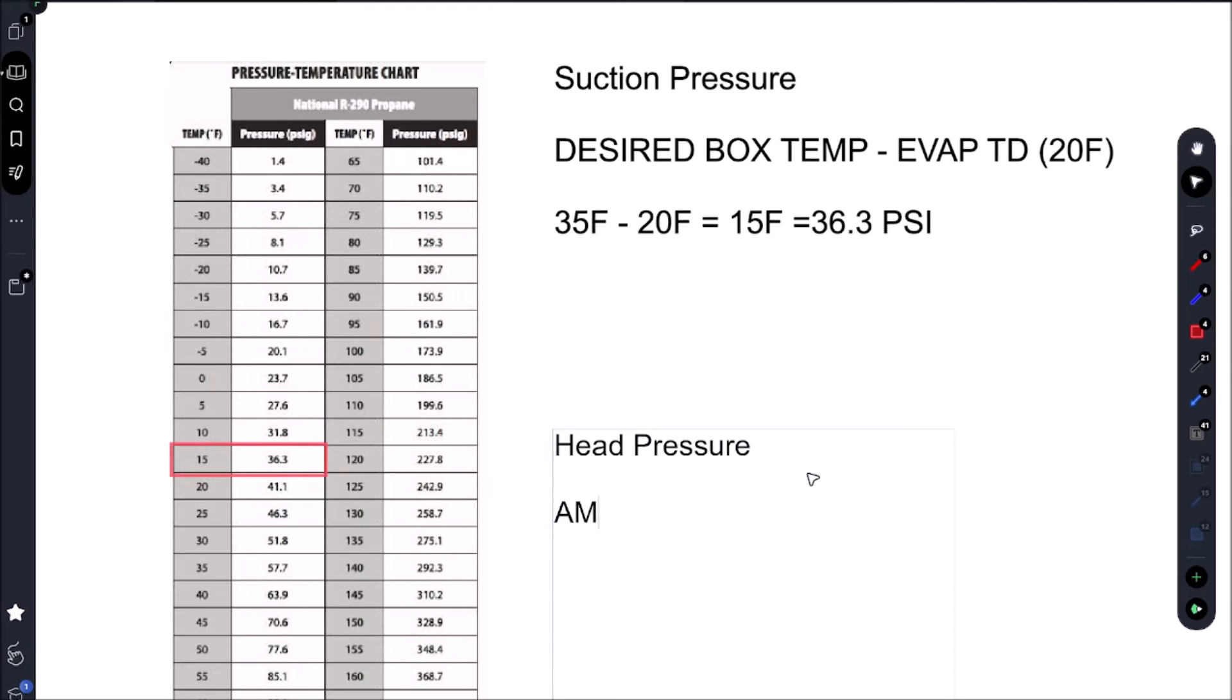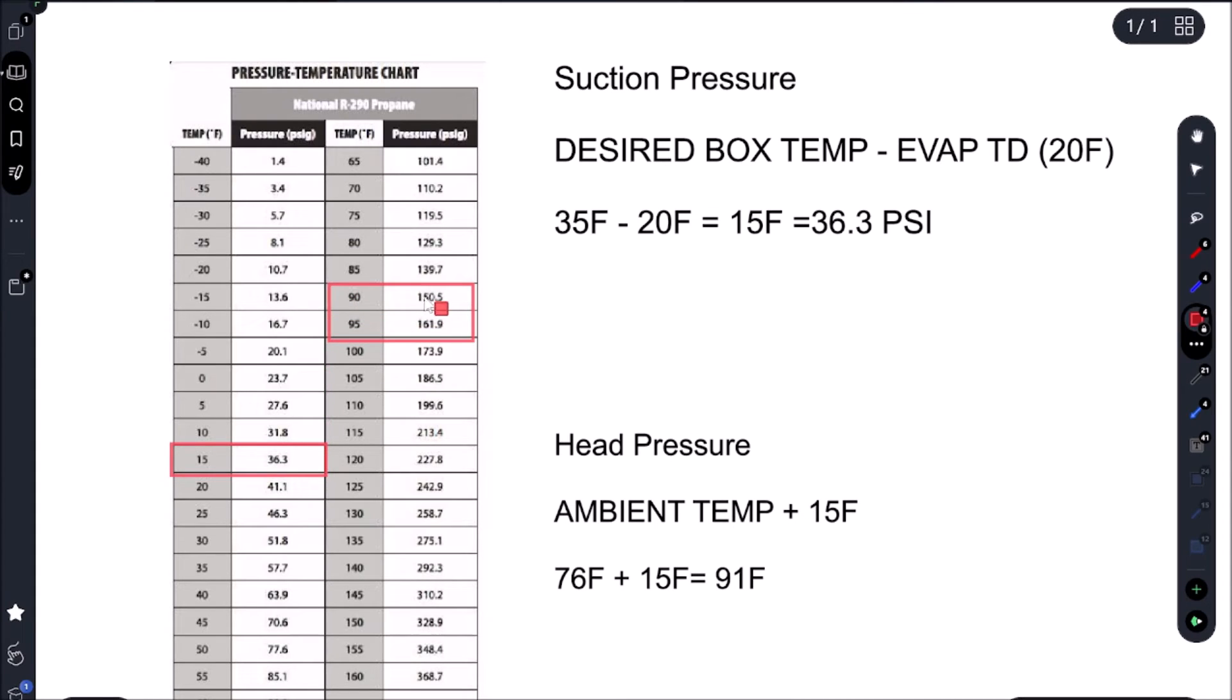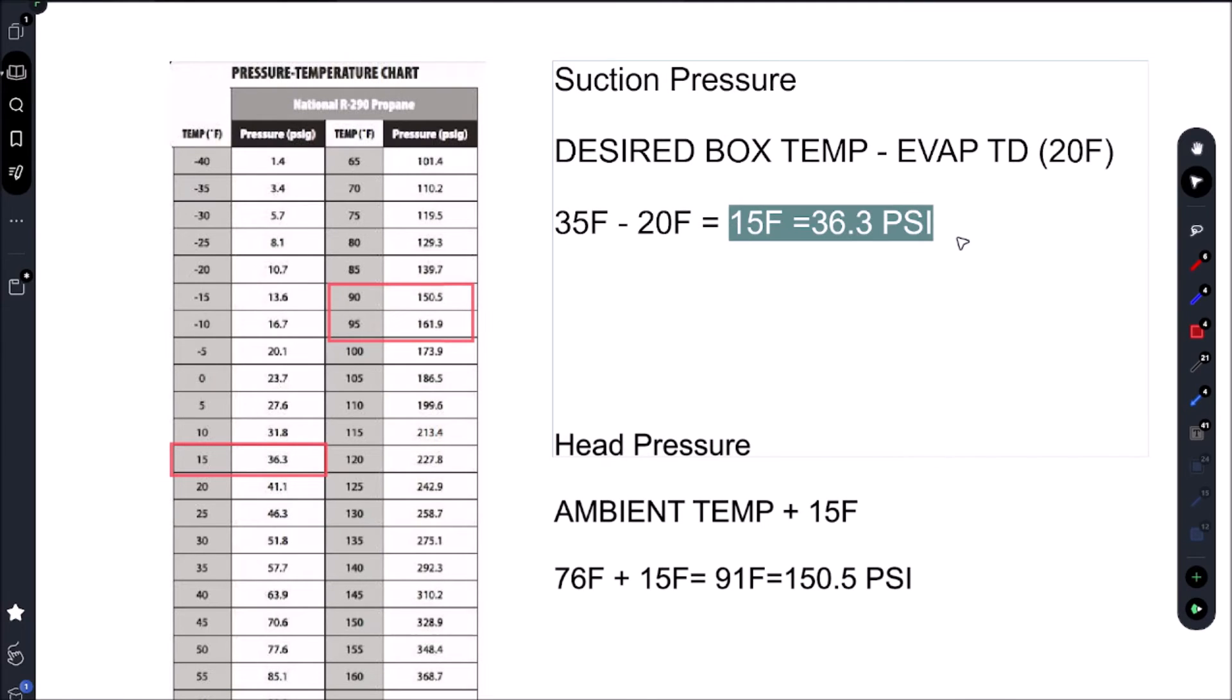If we go to our PT chart here, 15 Fahrenheit equals 36.3 PSI. To figure out our head pressure we're gonna take our ambient temperature and add our condenser split, in this case it's 15 Fahrenheit. I get asked a lot how do you know when it's 30, how do you know when it's 15. Almost everything that's new is going to be 15 now. They're doing this to help with the efficiency of the unit. Our ambient temp was 76 Fahrenheit, we're going to add our condenser split and that's going to give us 91 Fahrenheit. That is our saturation temperature. At 91 Fahrenheit we're getting around 150.5 PSI. Once we charge our unit we're going to be looking for these two values.